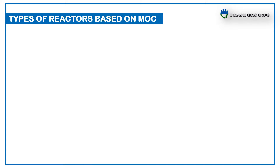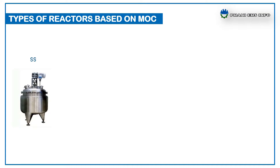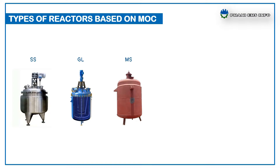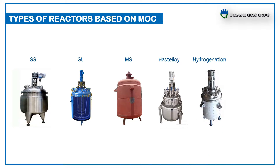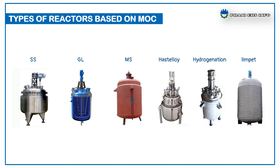Based on material of construction, which depends on chemical compatibility, there are different types of reactors. Some include SS reactors for base chemicals, glass-lined reactors for acids, MS reactors for handling residues and recoveries, Hastelloy reactors for both acids and bases, hydrogenation reactors for hydrogenation which withstand high pressure, and limpet reactors for heating or cooling through limpet coils.